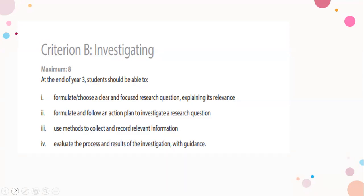The final strand in criterion B includes the following: evaluate the process and results of the investigation with guidance. I will give you guided questions here in order for you to reflect on your investigation. However, it depends on how you answer them. So if you answer them with only one line or two lines, barely elaborating and explaining, this will not lead you to seven to eight in the strand. You'll probably get less. So the more details that you reflect on, the higher the grade in this strand.